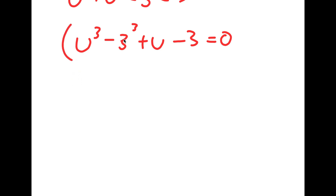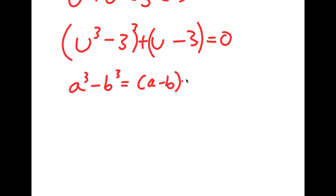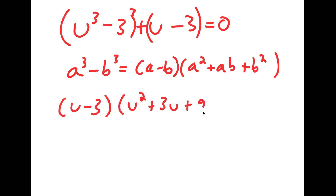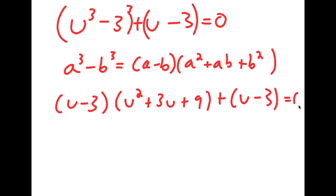Now, if I have something in the form a to the power of 3 minus b to the power of 3, this is equal to a minus b times a squared plus ab plus b squared. So in this case, this turns into u minus 3 times u squared plus 3u plus 9, plus u minus 3, which is equal to 0.